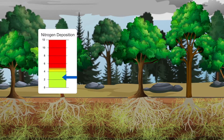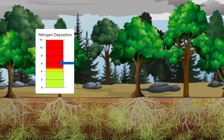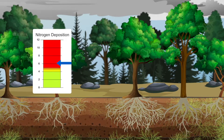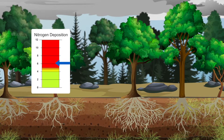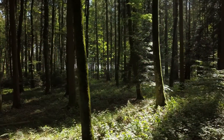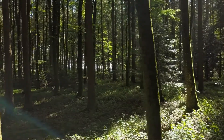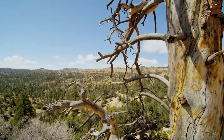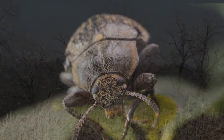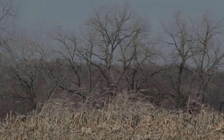If nitrogen deposition exceeds the critical load for mycorrhizal fungi, it reduces the growth of the more sensitive fungi and diminishes the fungi's partnerships with tree roots. As a result, the trees are less able to absorb nutrients and water from the soil, and more vulnerable to drought or insects. The stressed trees may grow more slowly, producing fewer leaves and seeds.